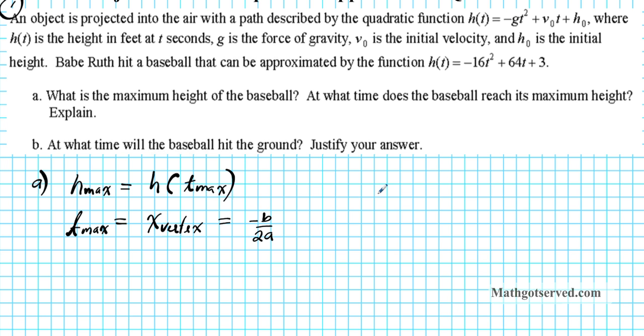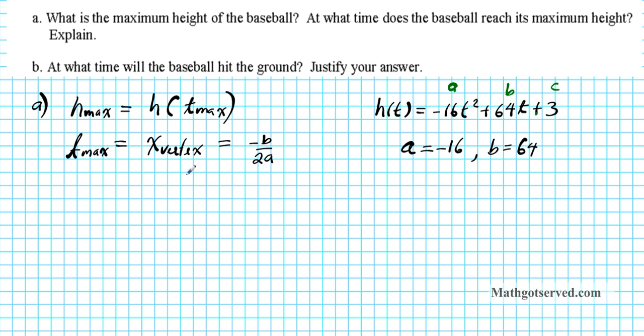So the function under consideration is h(t) equals negative 16t squared plus 64t plus 3. We can clearly see here that a is the coefficient of the square, negative 16, and b is the coefficient of the t, the first degree term which is 64. Remember the order for a quadratic equation in standard form. This is a, b, c. Alright, so these are the only two we need to compute the t max.